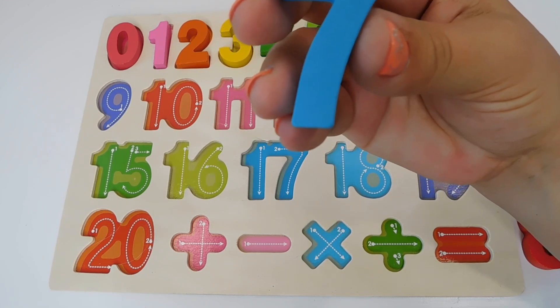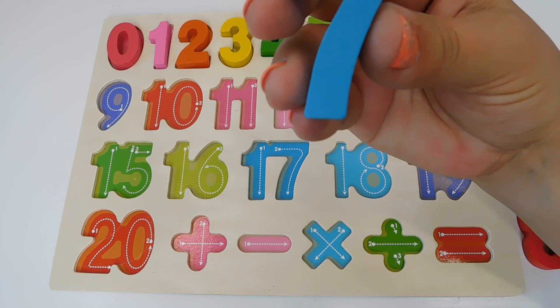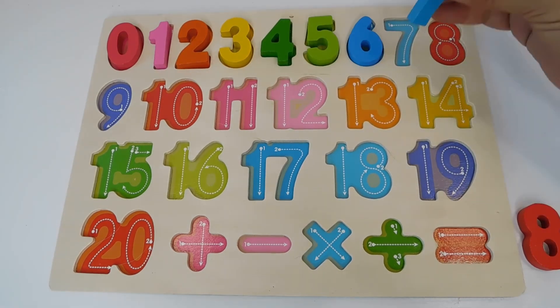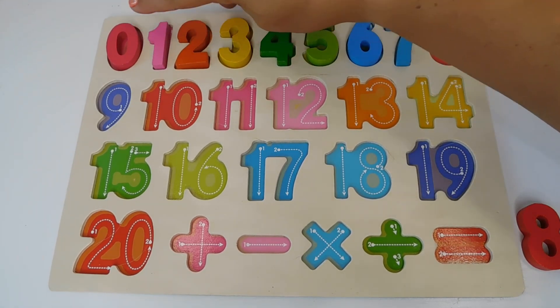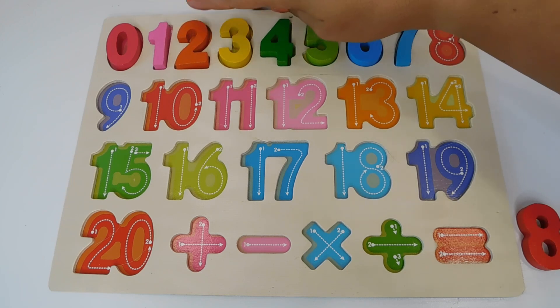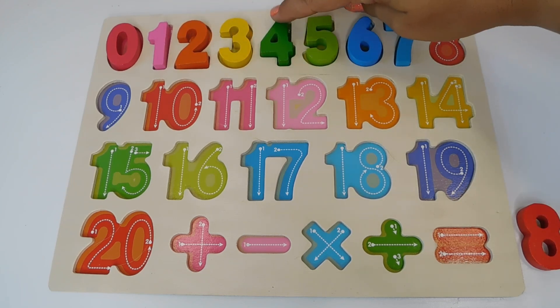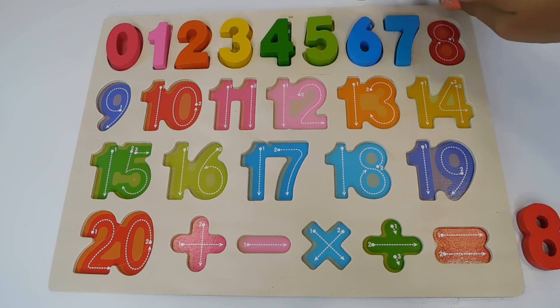Our next number is light blue, 7. Number 7. Number 7 goes here. 0, 1, 2, 3, 4, 5, 6, 7.